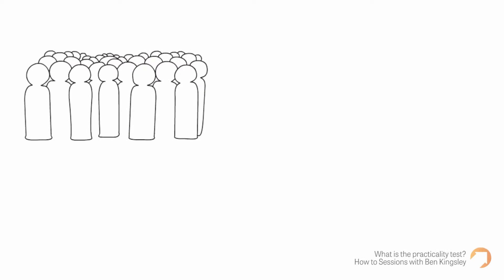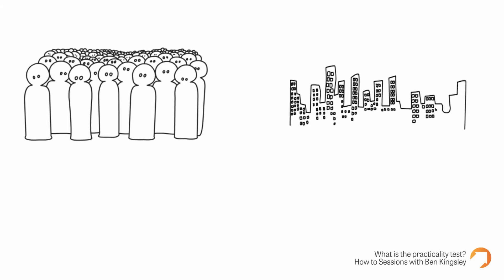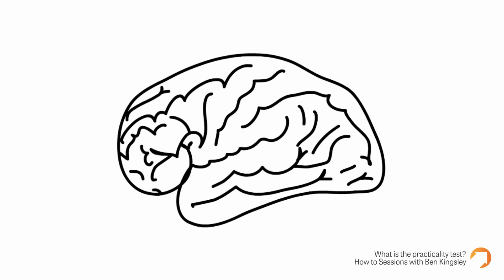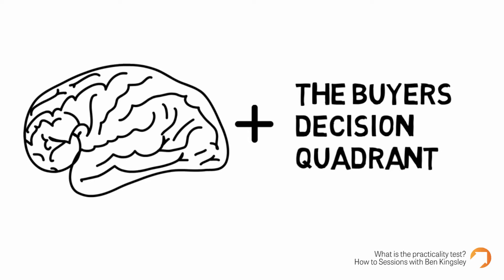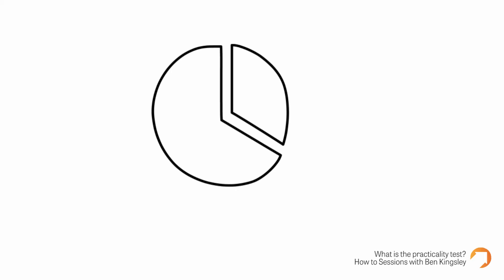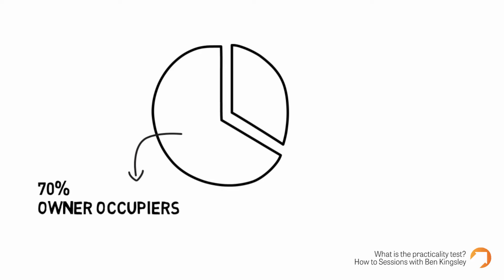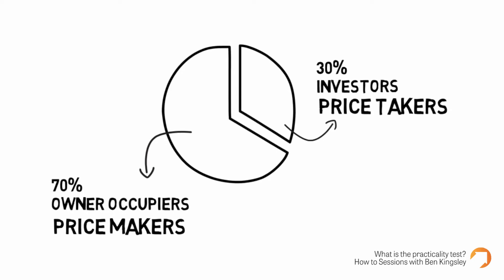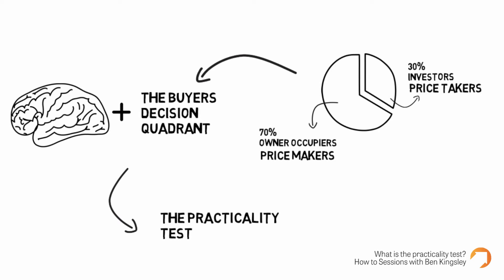We know the concept of demand and supply — supply is led by demand, and sometimes we can overshoot on supply, which obviously impacts prices. But I also want to get into the psychology of decision making around where we buy. Leading on from the buyer's decision quadrant, I call this the practicality test. I'm focusing in on my audiences, and we know that 70% of property is owned by owner-occupiers. So they are price makers and investors should be price takers.